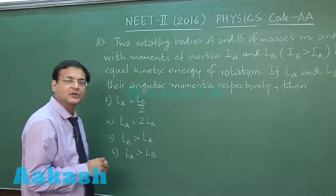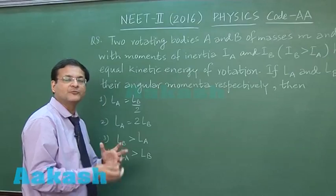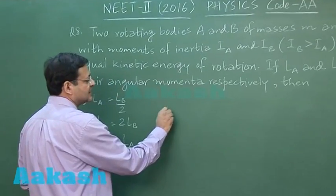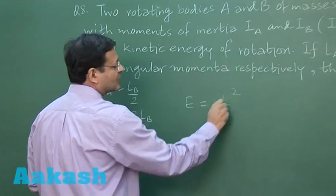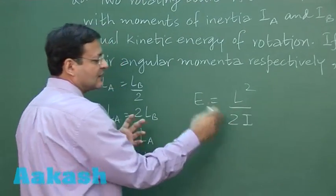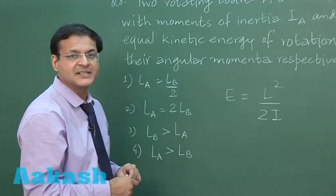As you have energy equals p squared by 2m for linear motion, here also you can say energy is L squared by twice of I. This is the relation you have, and they are saying kinetic energy is same.